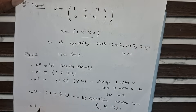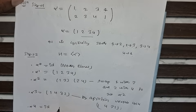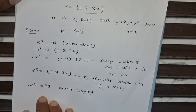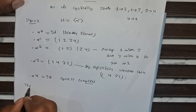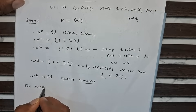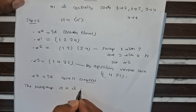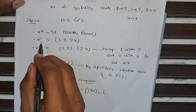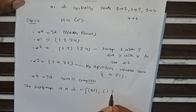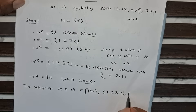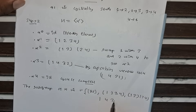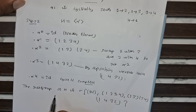Alpha to the power 4 is always equal to the identity, meaning the cycle is complete. So the subgroup H equals: the identity element, alpha to the power 1 which is (1,2,3,4), alpha squared which is (1,3)(2,4), and alpha cubed which is (1,4,3,2). This is the subgroup H.